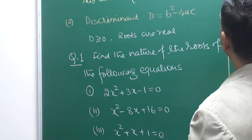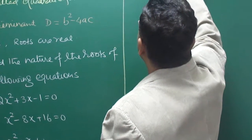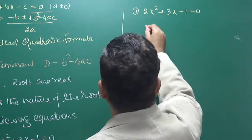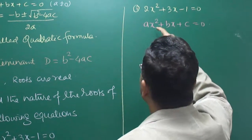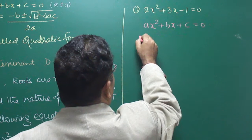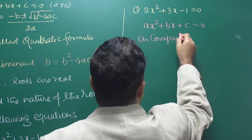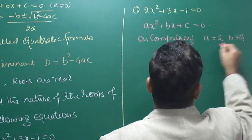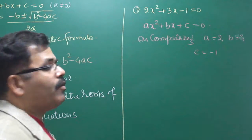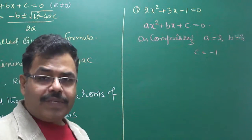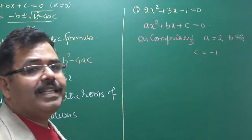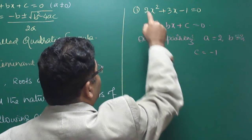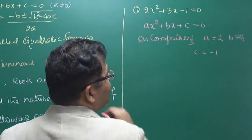The first question is 2x squared plus 3x minus 1 equals zero. We compare this with the standard form ax squared plus bx plus c equals zero. The coefficient of x squared is A, the coefficient of x is B, and the constant term is C. On comparing, A equals 2, B equals 3, and C equals minus 1.